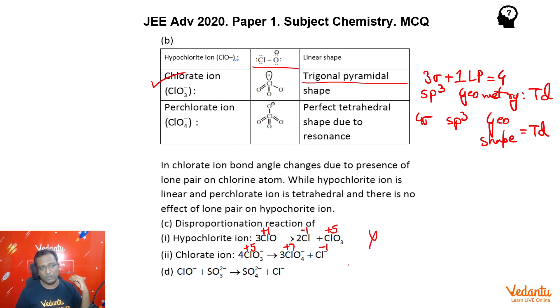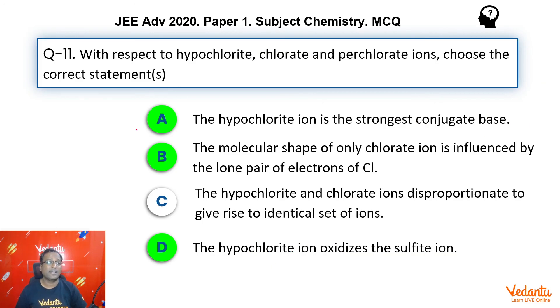Next was about hypochlorite oxidizing sulfite. So, yes, that's indeed correct. It's a strong oxidizing agent. So, it oxidizes sulfite into sulfate, itself reducing to a negative oxidation state. Hence, the correct answers are A, B and D.